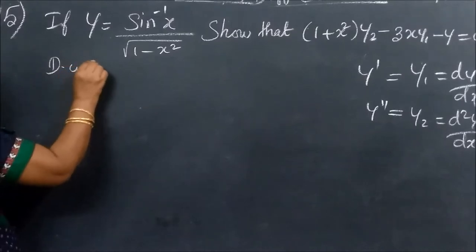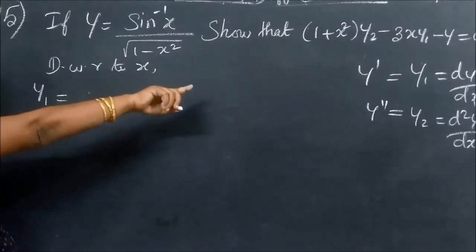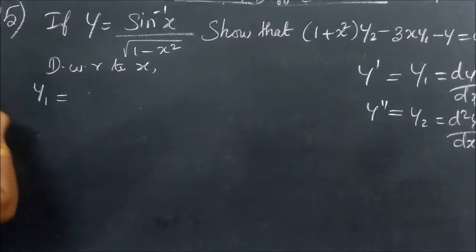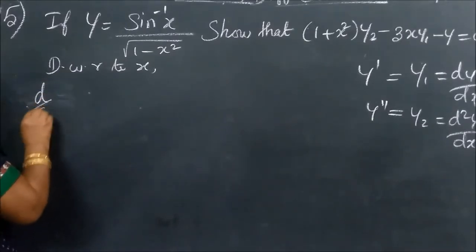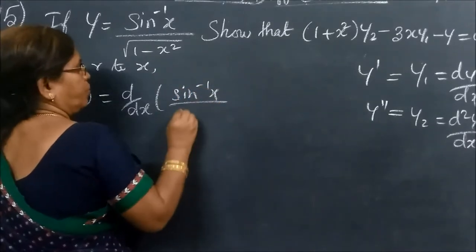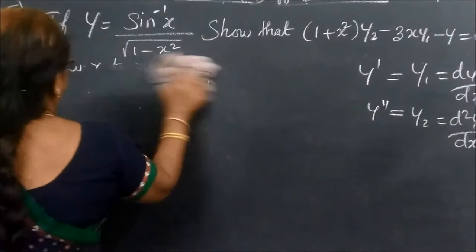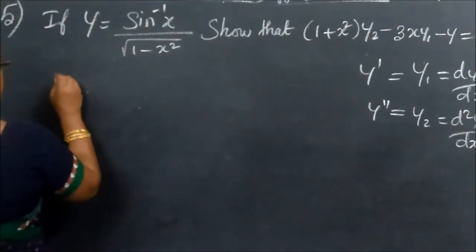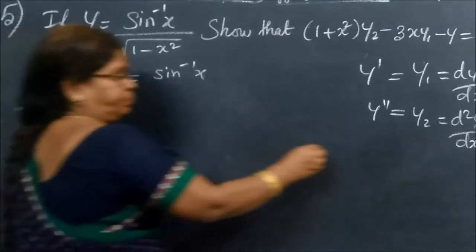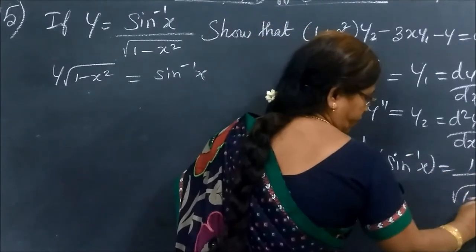Now differentiate with respect to X. What is Y1? Y1 means dY/dX. Y is sin inverse X, so we differentiate: dY/dX of sin inverse X. Y1 is equal to 1 by root of 1 minus X square.